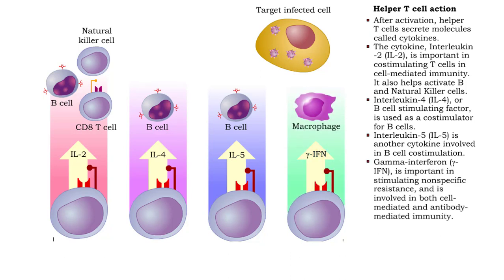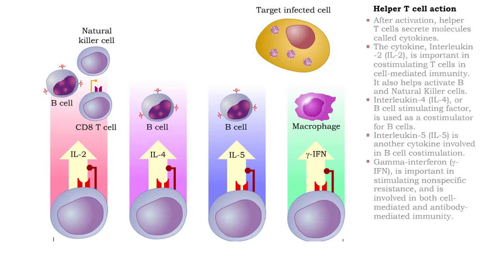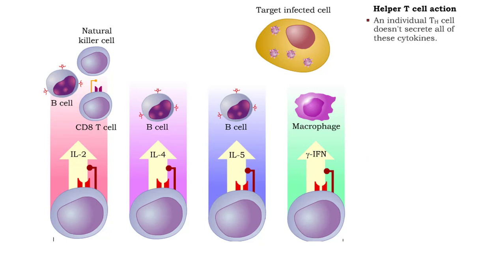In addition, helper T cells can secrete gamma interferon, which stimulates phagocytosis and nonspecific resistance. Gamma interferon is involved in both cell-mediated and antibody-mediated immunity.